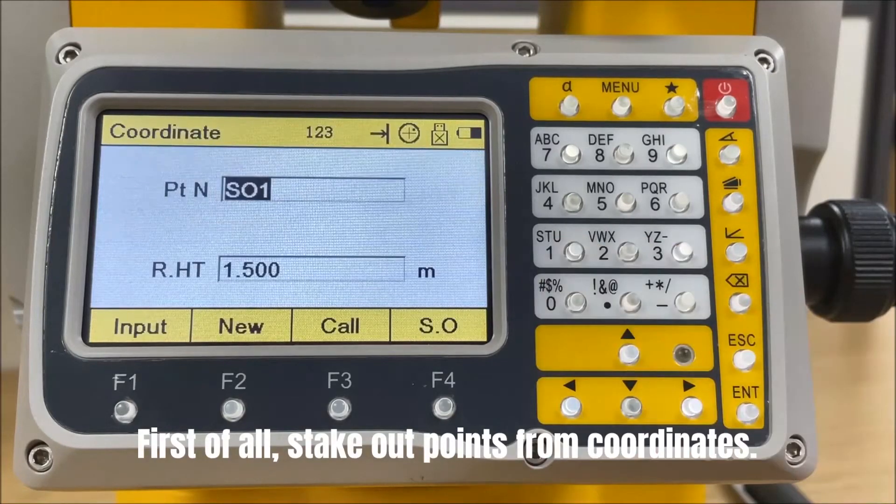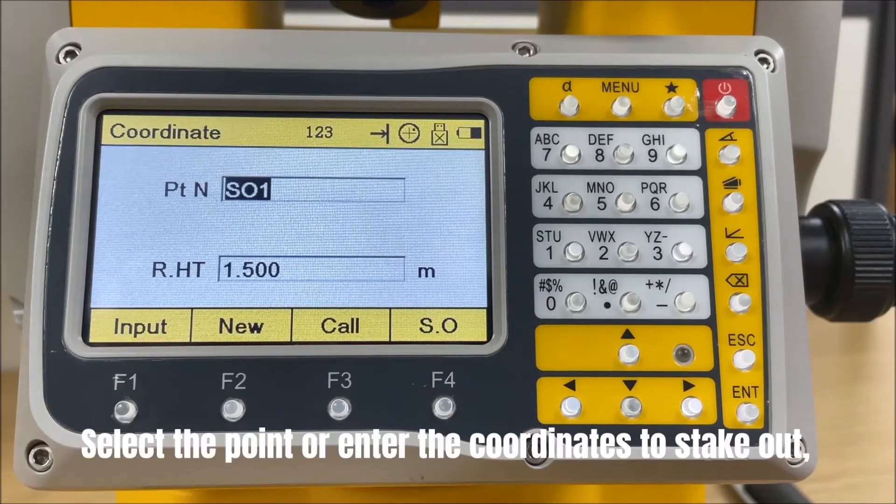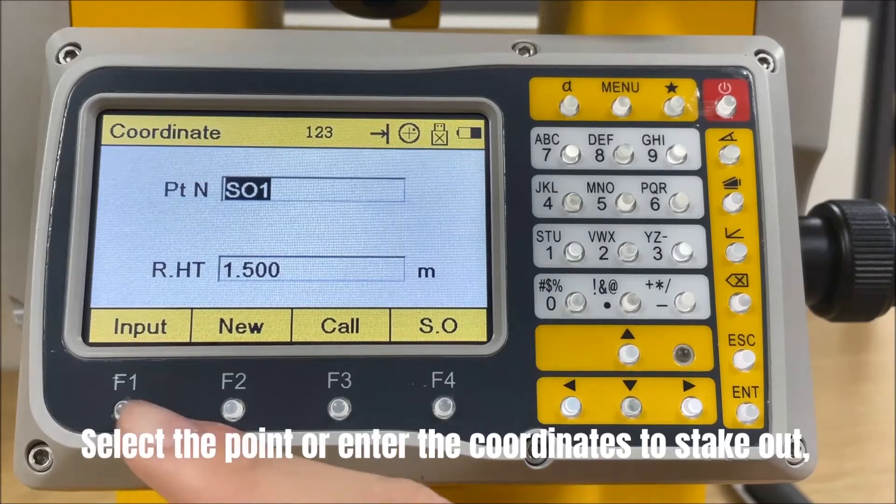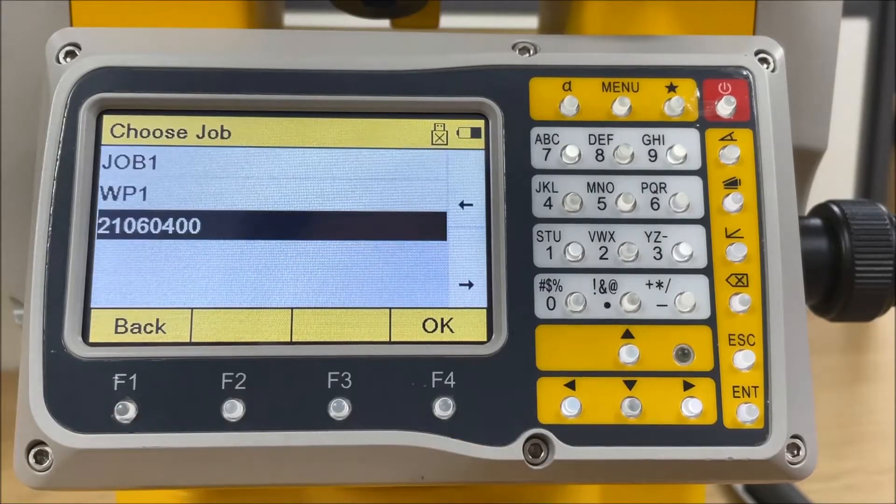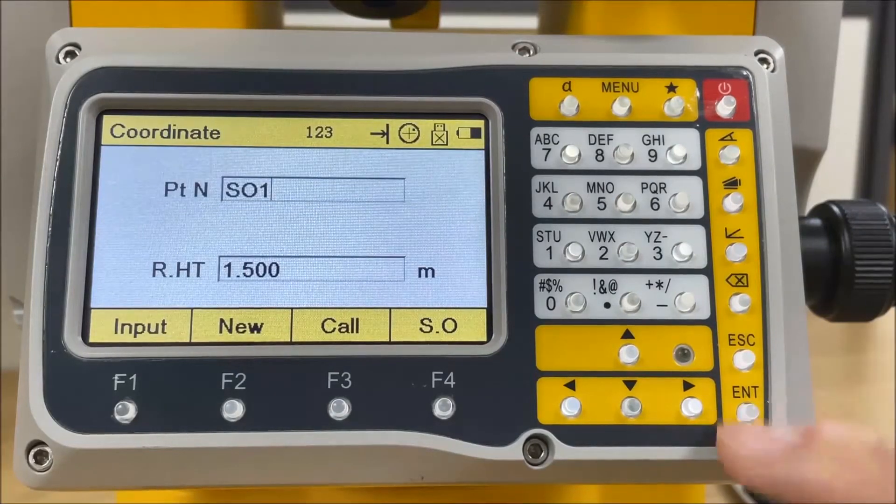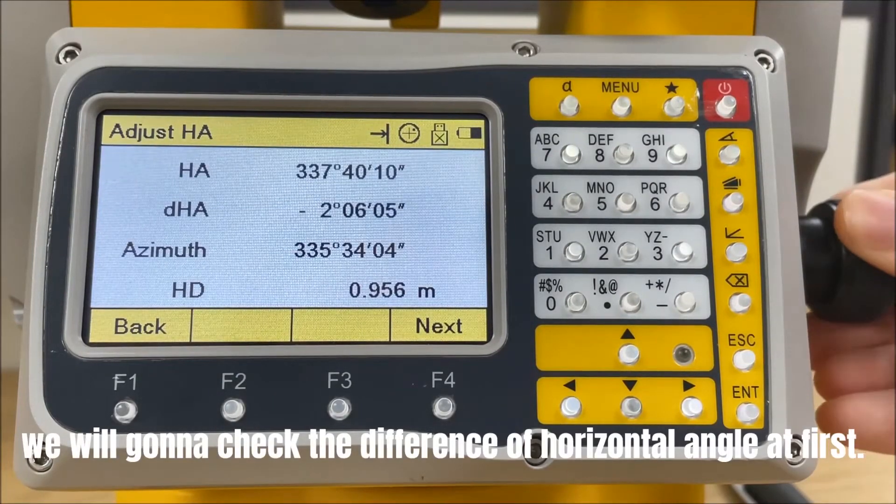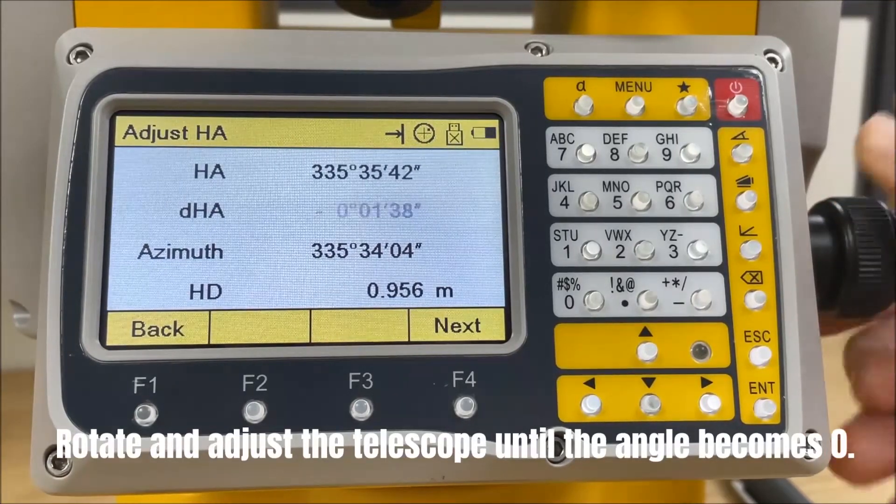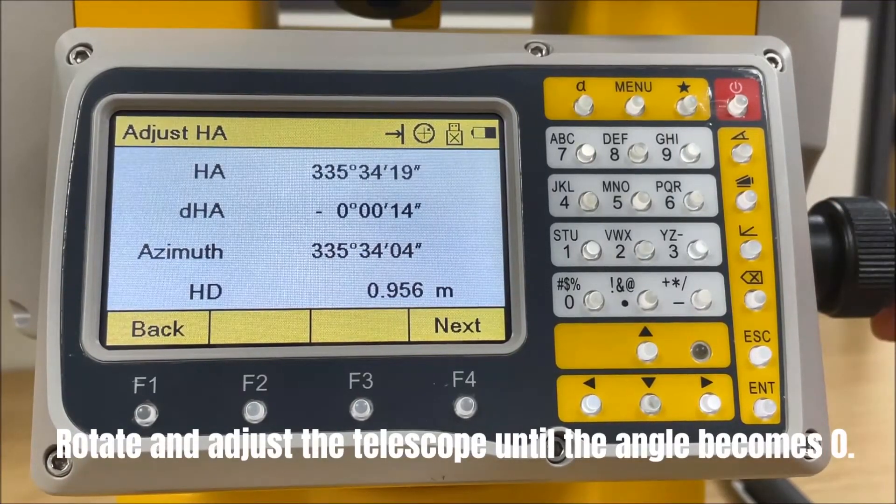First of all, stake out points from coordinates. Select the point or enter the coordinates to stake out. We will check the difference of horizontal angle at first. Rotate and adjust the telescope until the angle becomes zero.